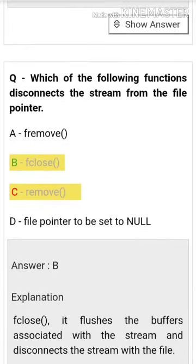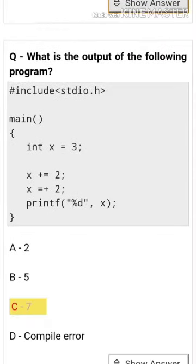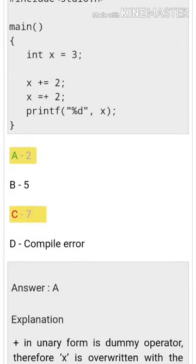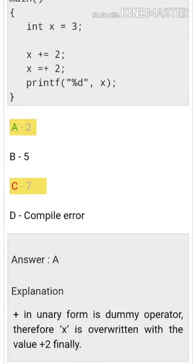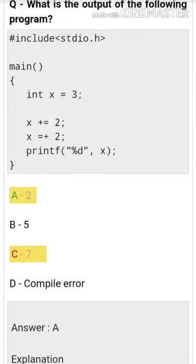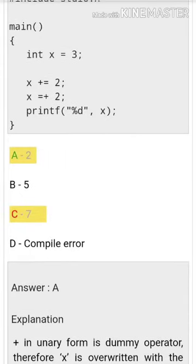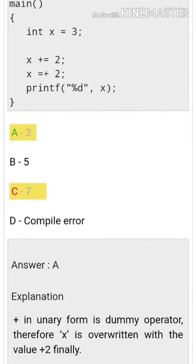What is the output of the following program? The answer is plus 2. In unary form, plus is a dummy operator. Therefore x is returned with the value plus two.